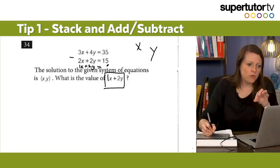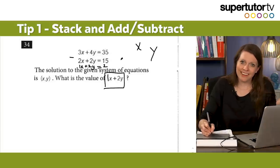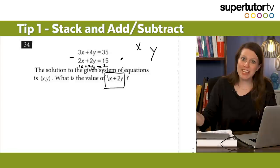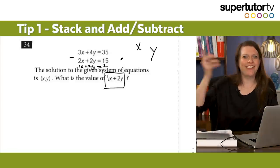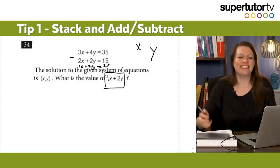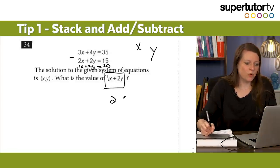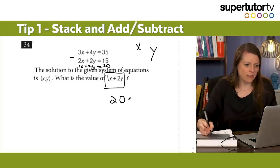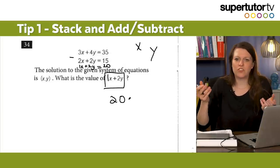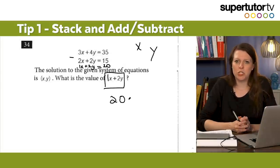And then I'm going to do 35 minus 15, which is 20. And then I'm done — 20. You see how I don't have to do anything additional? I literally just write 20 and I'm totally done. Stack and add or subtract — that's trick number one.